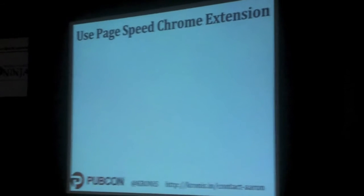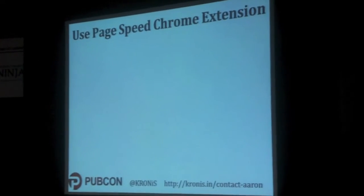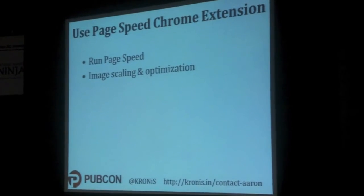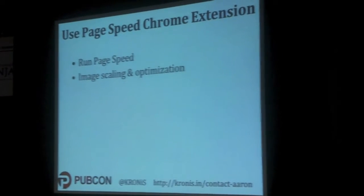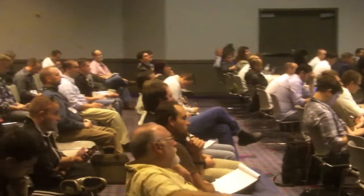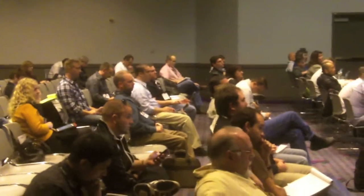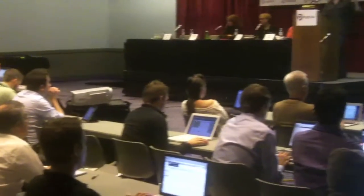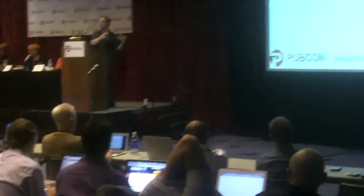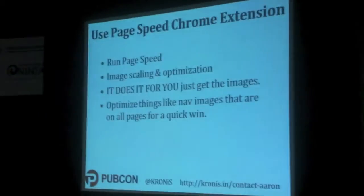Page speed is very important. Run the PageSpeed tool on your site and it'll say which images need to be optimized — it actually optimizes them for you. Right-click and save the image it's suggesting. What you can do is send those optimized images to your clients in an email — don't send them to the PageSpeed tool, because they won't understand it. That's an annoying thing a lot of SEOs do: 'just run page speed, just fix your images.' No — give them the images that need to be optimized, tell them where they need to be replaced. If your navigation images need to be optimized and they're on every page of the site, optimizing those six images is a super quick win to speed up the entire site.